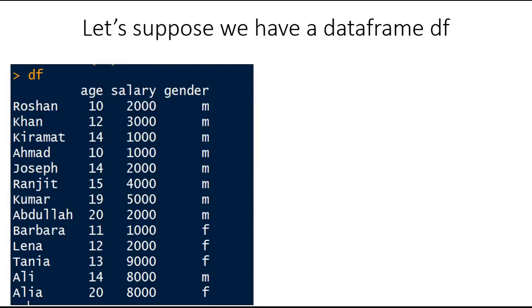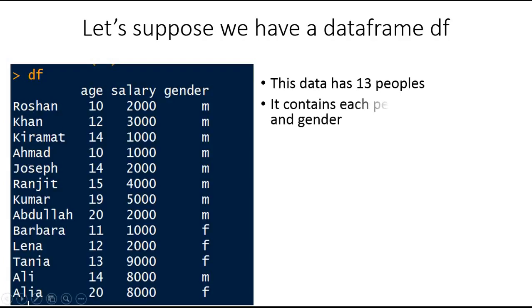So this is a data frame. The name of the data frame is df, and this data frame, as you can see, has 13 observations. About each person we have variables like age, salary, and gender.